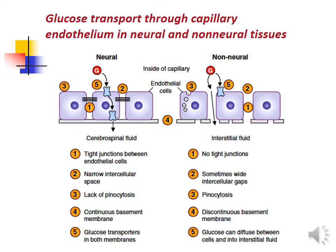The figure shows glucose transport through capillary epithelium in neural and non-neural tissues. In neural tissue, tight junctions are present between endothelial cells with narrow intracellular spaces. It lacks pinocytosis and has a continuous basement membrane, with glucose transporters located in both membranes. In non-neural tissues, there are no tight junctions, wide intracellular gaps are present, pinocytosis occurs, and they have a discontinuous basement membrane, allowing glucose to diffuse between cells into interstitial fluid.